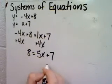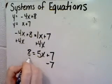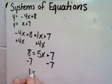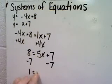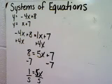Then I'm going to get the x by itself. I'm going to use inverse operations, subtracting 7 from both sides. And then that's going to give me 1/5 equals x.